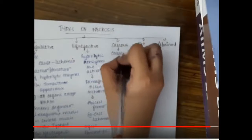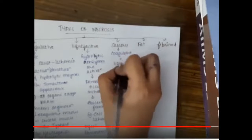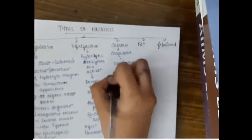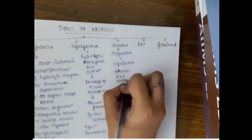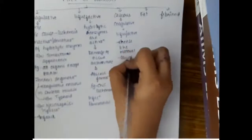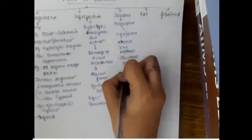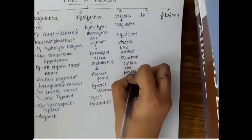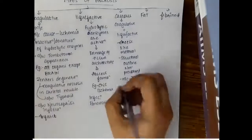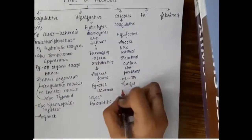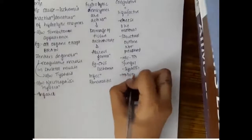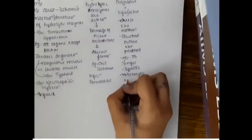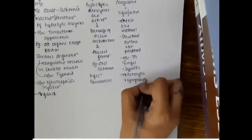The third type of necrosis is caseous necrosis, which is both coagulative and liquefactive necrosis. In caseous necrosis there is presence of cheese-like material. The structural outline is not preserved. It is most commonly seen in tuberculosis, fungal infection, syphilis, and is also seen in monocytic and lymphocytic infiltration.